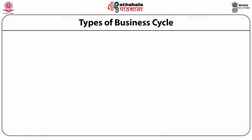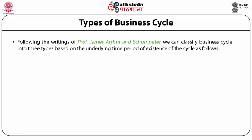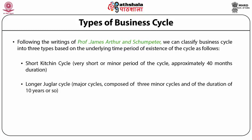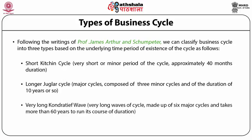Types of business cycles: following the writing of Professor James Arthur and Schumpeter, we can classify business cycles into three types based on the underlying time period. First, the short Kitchin cycle — a very short or minor period of approximately 40 months duration. Second, the longer Juglar cycle — a major cycle composed of three minor cycles with a duration of about 10 years. Third, the very long Kondratieff wave — a very long wave made up of six major cycles, taking more than 60 years to run its course.